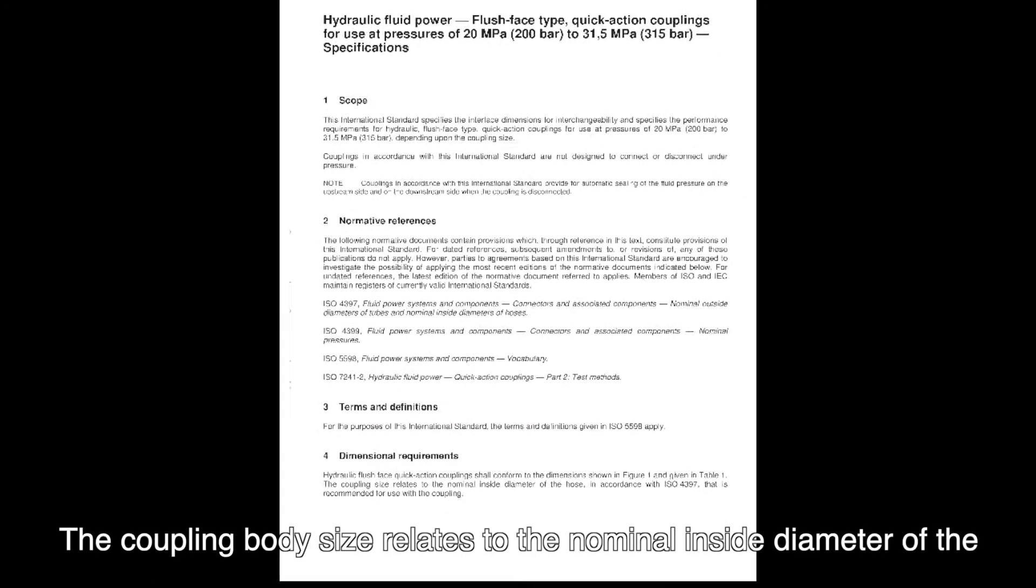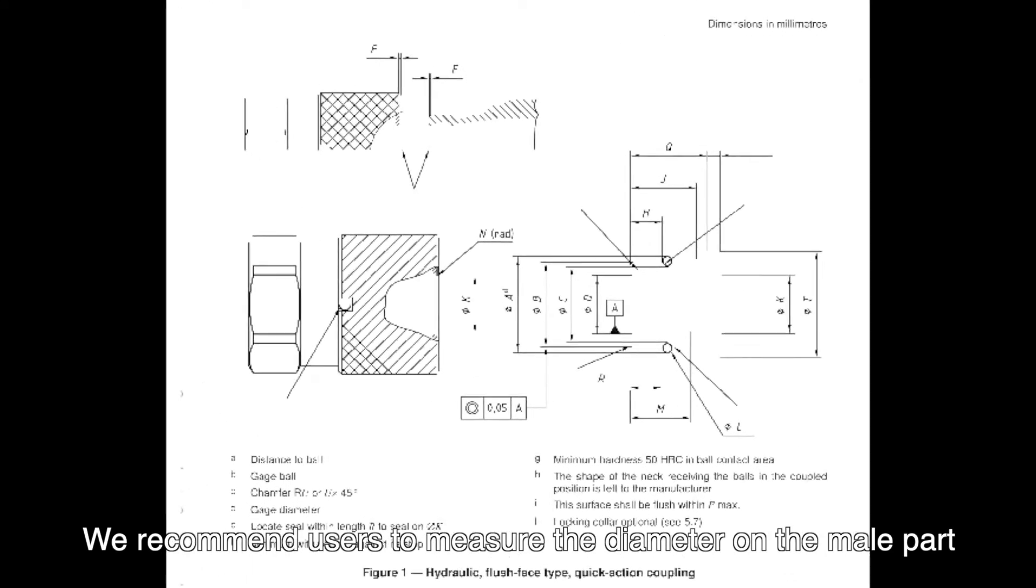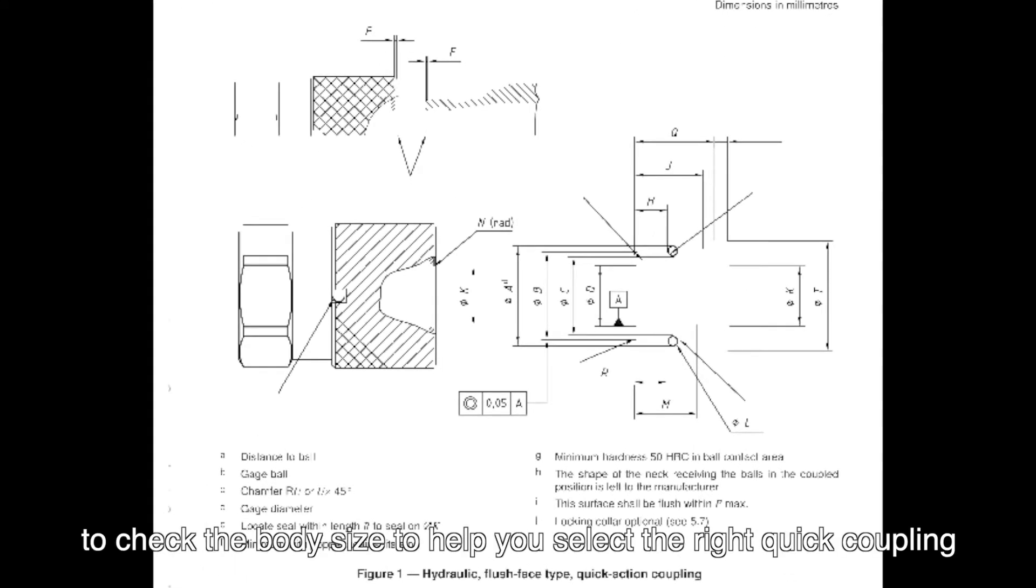The coupling body size relates to the nominal inside diameter of the hose. Usually the body size fits the hose size for the hydraulic applications. We recommend users to measure the diameter on the male part to check the body size to help you select the right quick coupling.